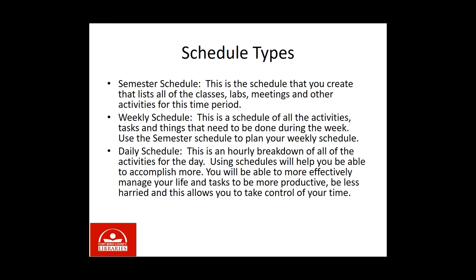There are several schedule types. A semester schedule lists all your classes, labs, meetings, and other activities for that time period. A weekly schedule covers all activities and tasks that need to be done during the week — use the semester schedule to plan it. A daily schedule is an hourly breakdown of all activities for the day. It helps you accomplish more, manage your life more effectively, be less harried, and take control of your time.